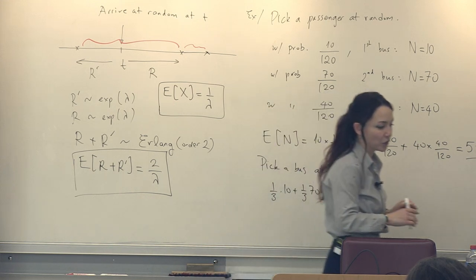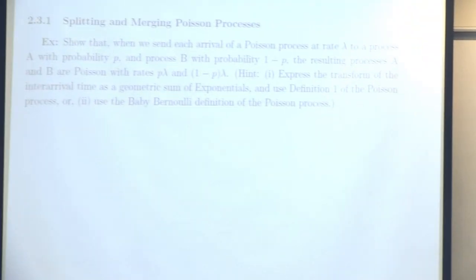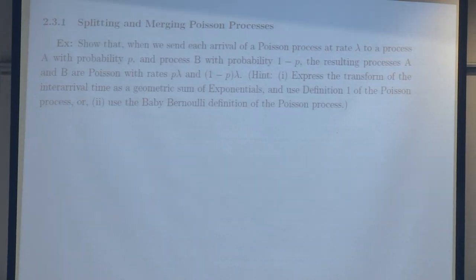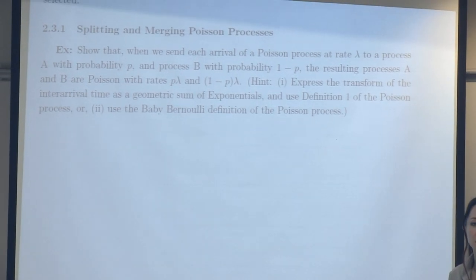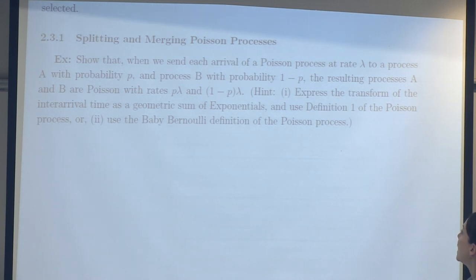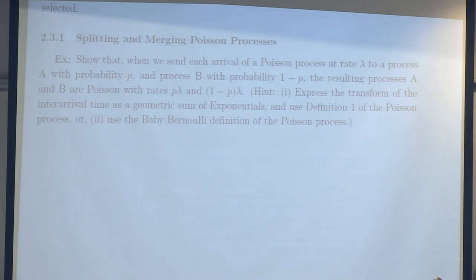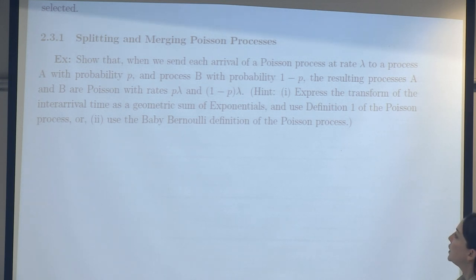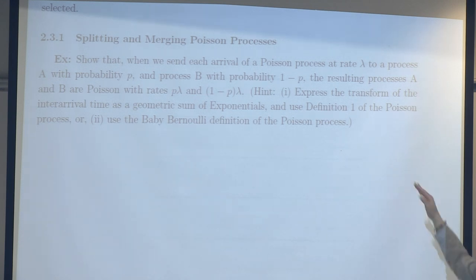The next topic we are going to consider is splitting and merging Poisson processes. Let's study splitting first through an exercise. We will show that when we send each arrival of a Poisson process at rate λ to process A with probability p and to process B with probability 1-p, the resulting processes A and B are each Poisson with rates pλ and (1-p)λ. There are two different methods to show this.